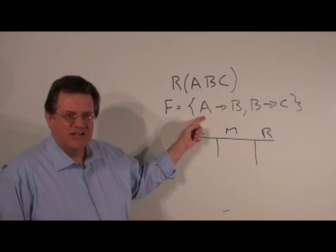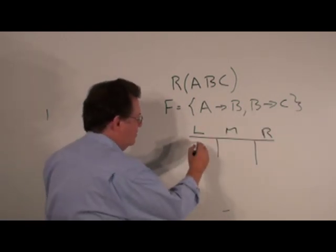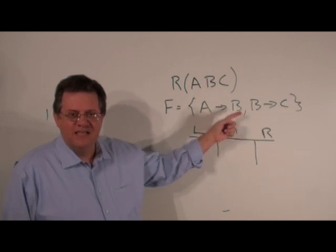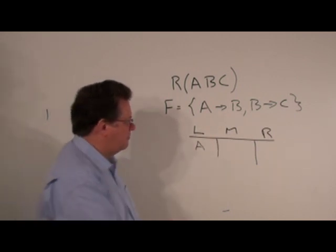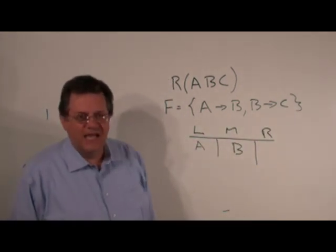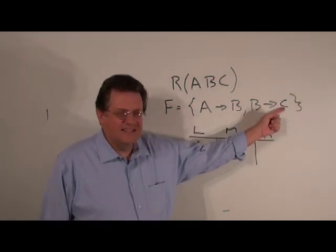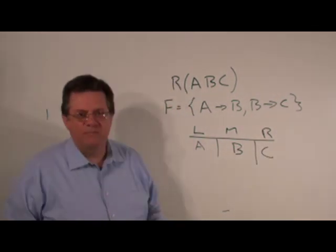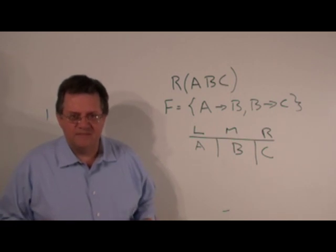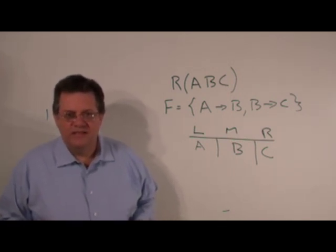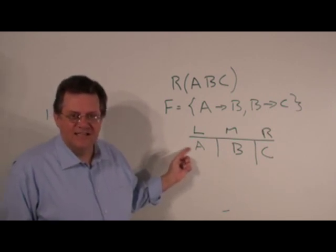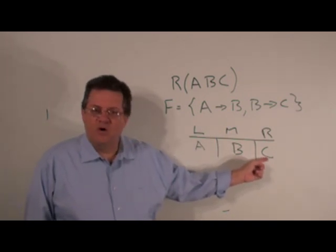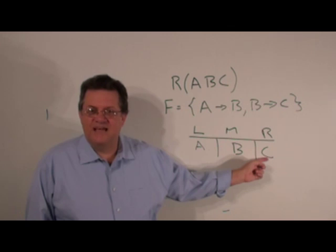Let's go through it. Attribute A shows up on the left and nowhere else, so we put A in the L column. B showed up on the right-hand side of one functional dependency and on the left-hand side of another, so we put B in the middle. C only occurs on the right-hand side, so we put C in the R column. The rule is: if an attribute only occurs on the left-hand side, it must be part of every key. If it only shows up on the right-hand side, it is not part of any key. The ones in the middle may or may not be part of a key.